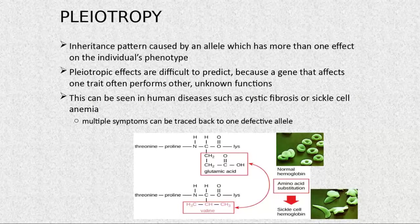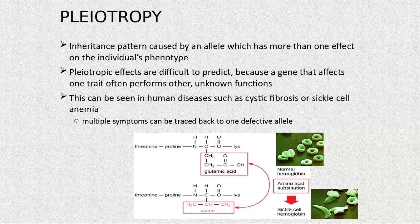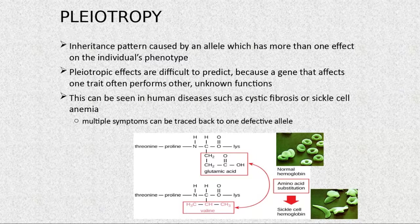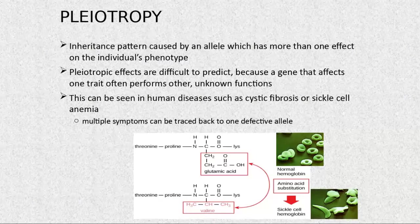Pleiotropy refers to only one allele — actually only one nitrogenous base that has been changed in the DNA — causing multiple diseases or defects.